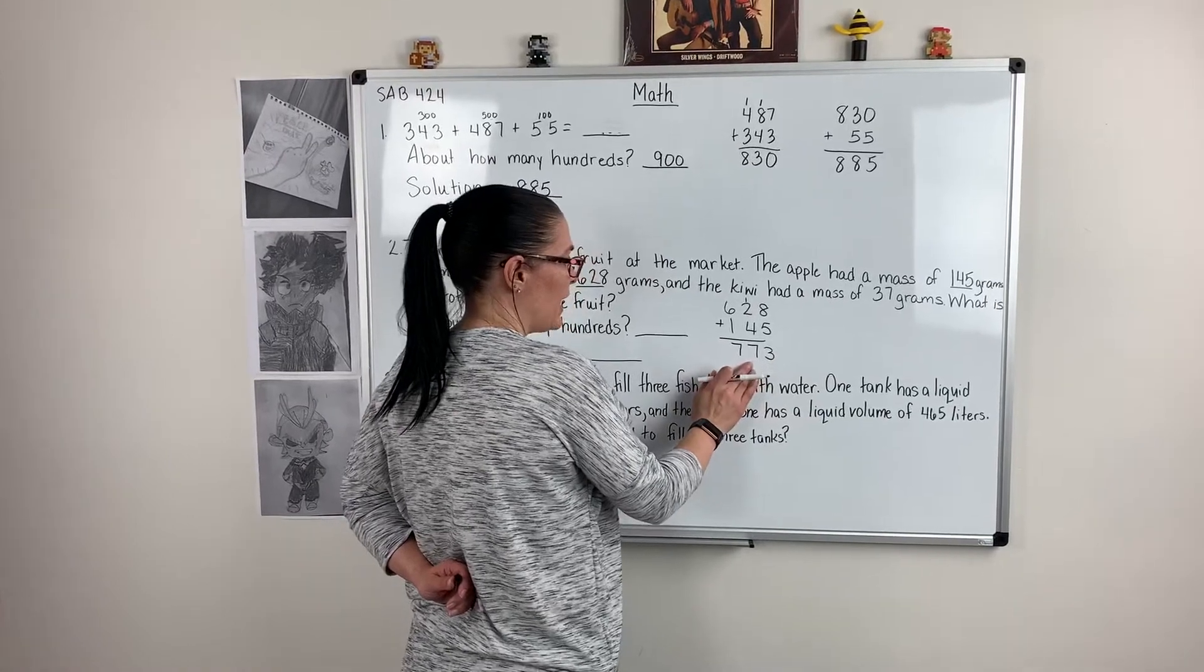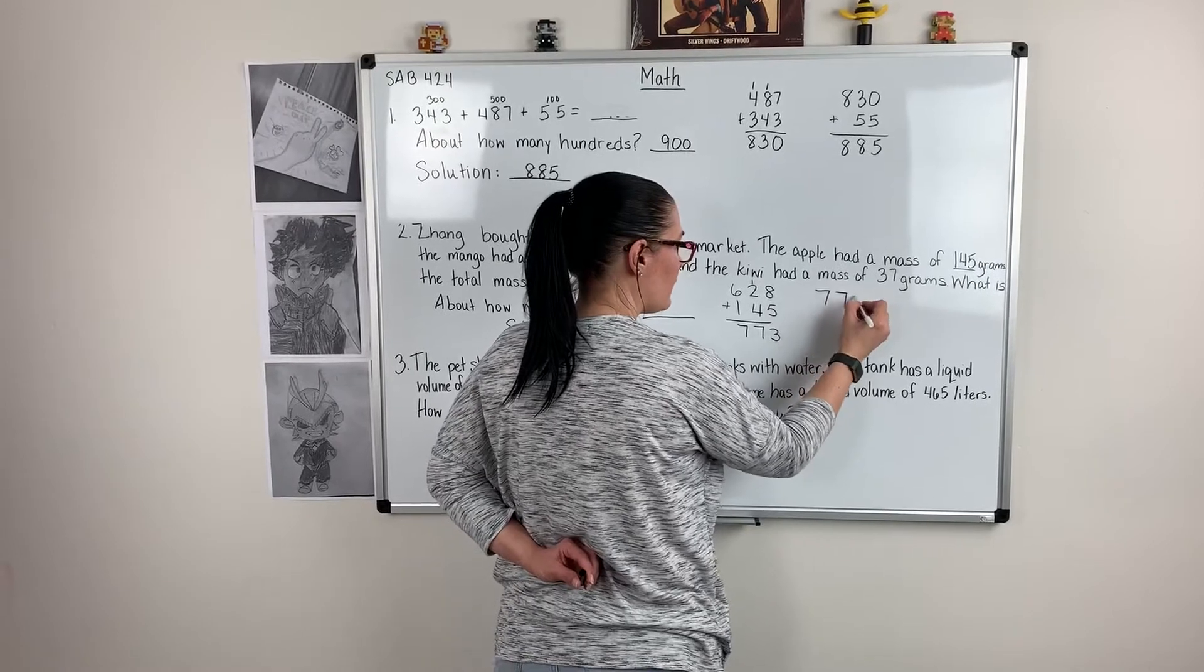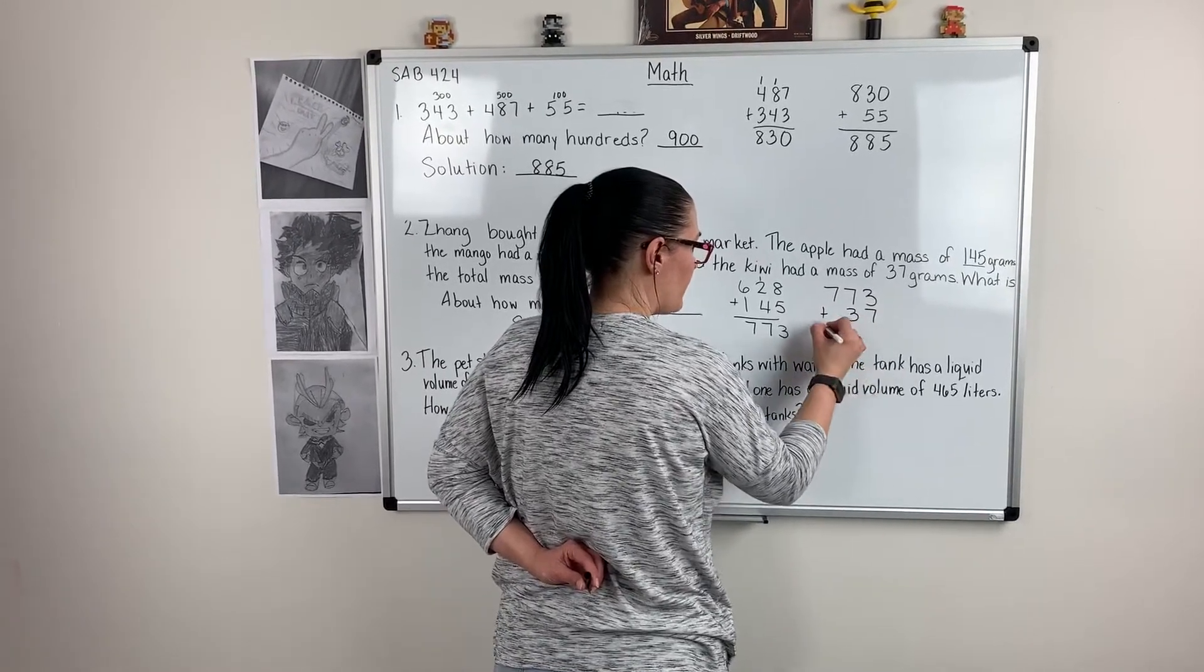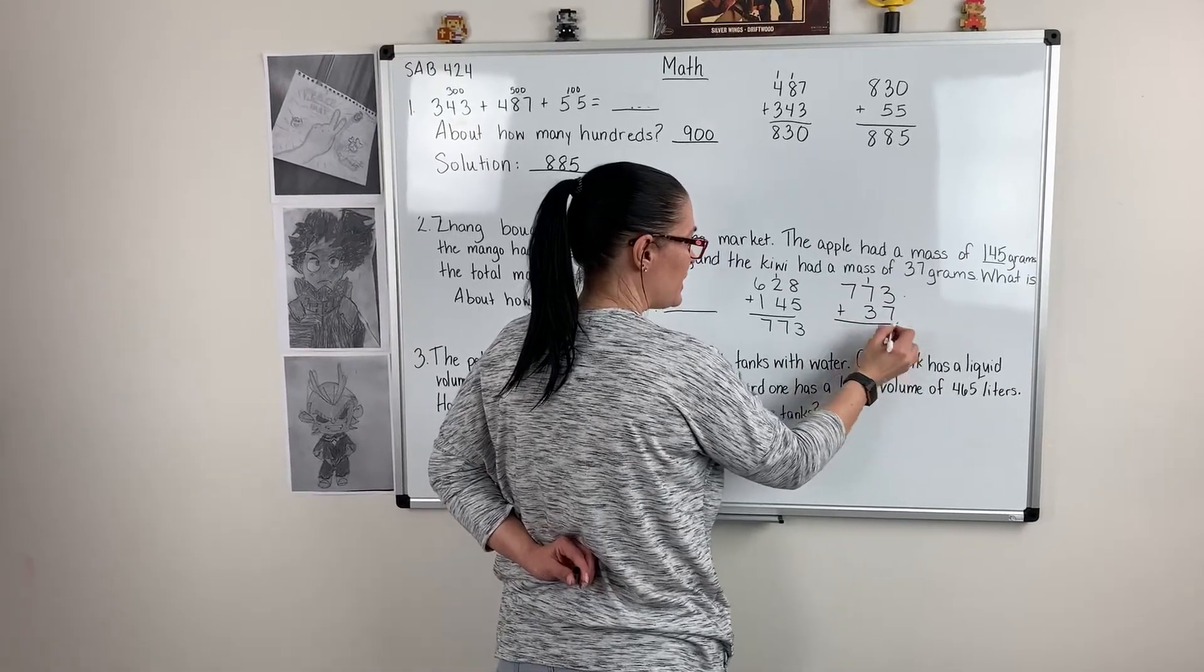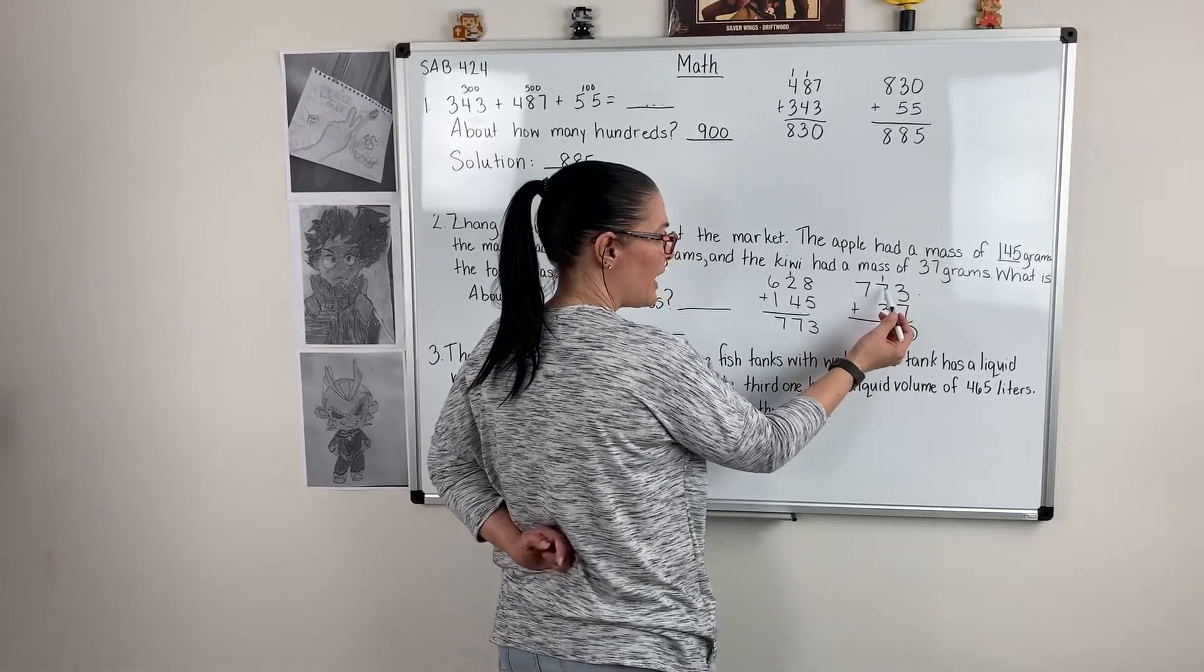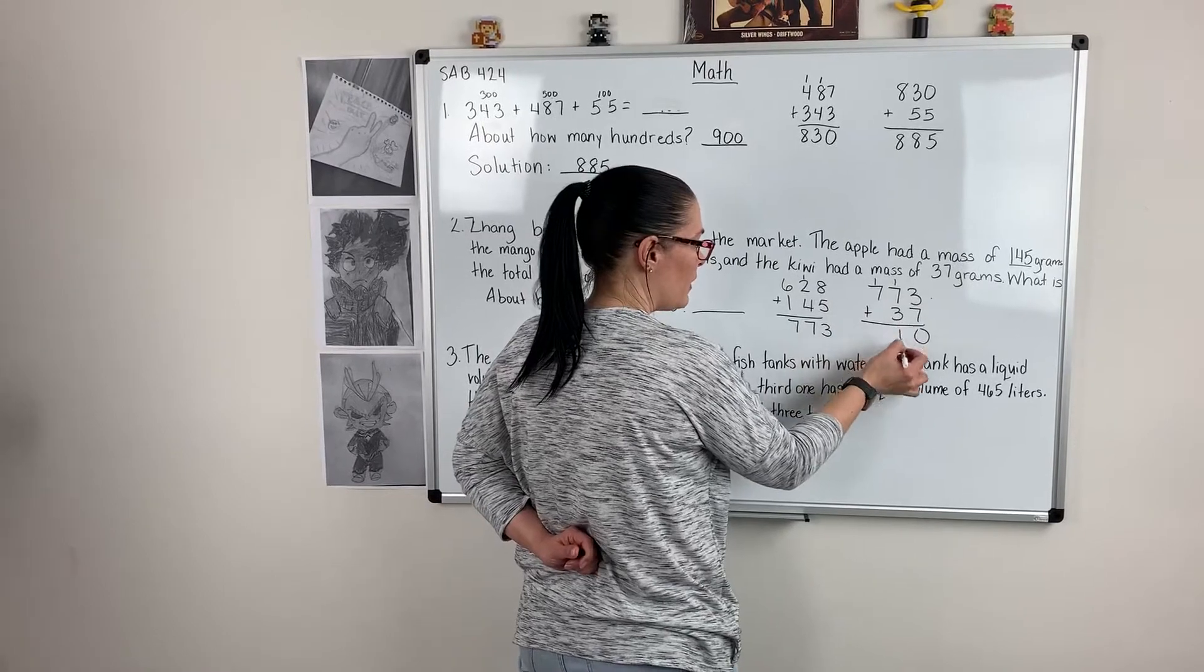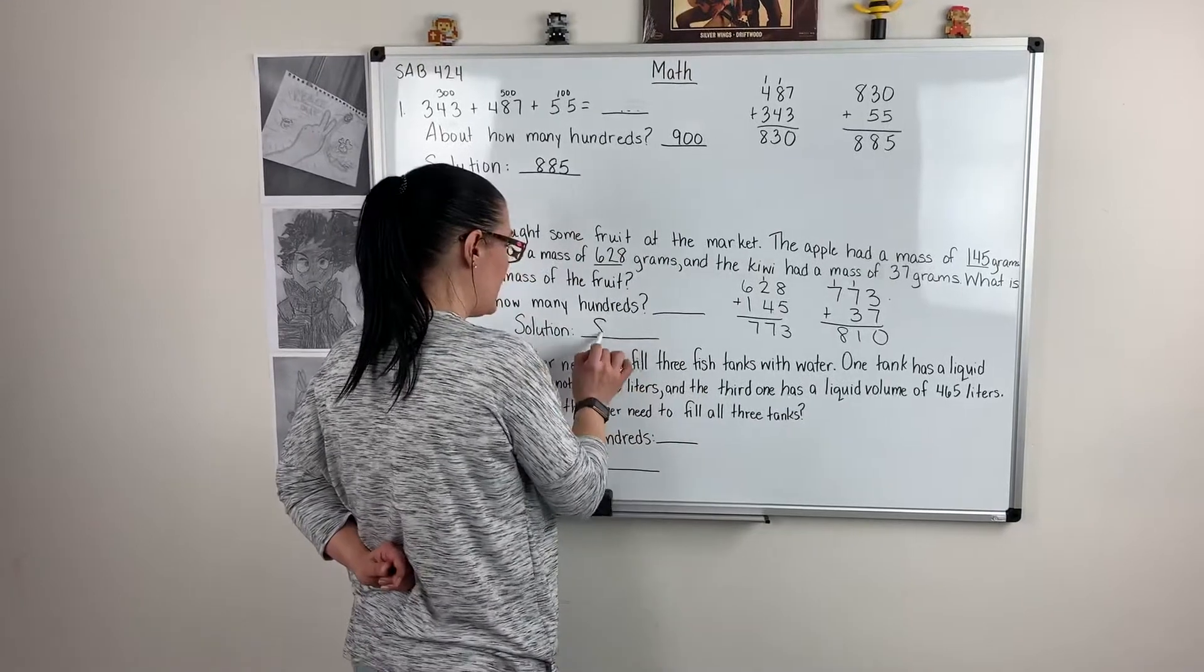Then I need to add my 773 plus my 37. 3 plus 7 is 10. I need to put my 10 in my tens place, my zero in my ones place. 1 plus 7 is 8. 8 plus 3 is 11. 1 plus 7 is 8. So our solution is 810.